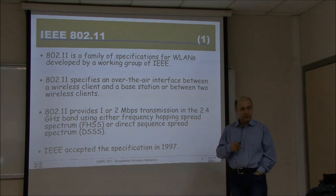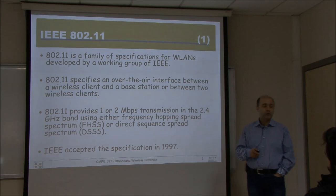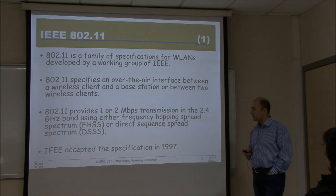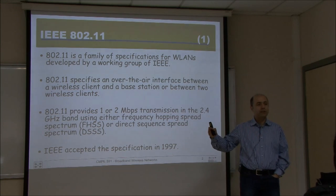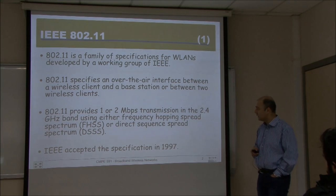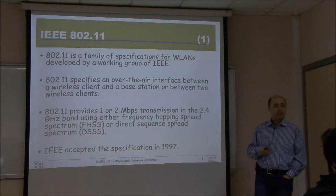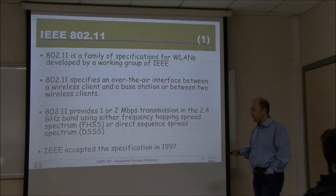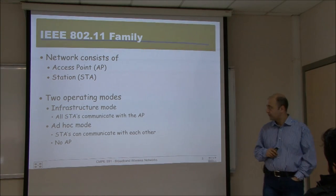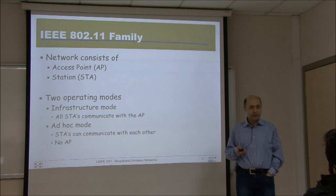The ad-hoc mode is not frequently used. The original 802.11 provides 1 or 2 Mbps transmission in the 2.4 GHz ISM band, which is license-free, using either frequency hopping spread spectrum — where you hop from one frequency to another across multiple channels — or direct sequence spread spectrum (DSSS), which forms the basis for CDMA. IEEE accepted that original specification in 1997, and then came the variations.